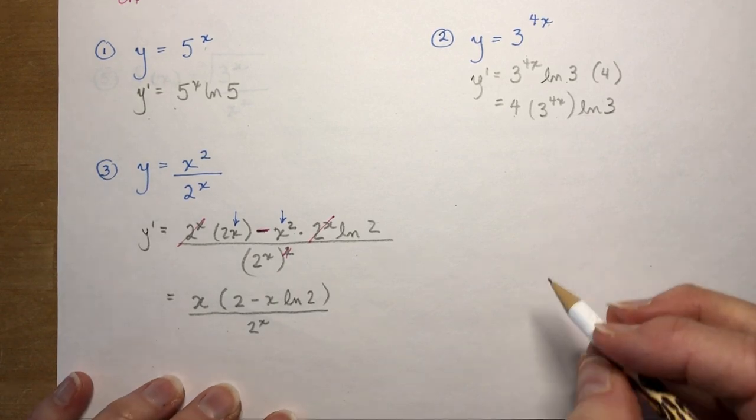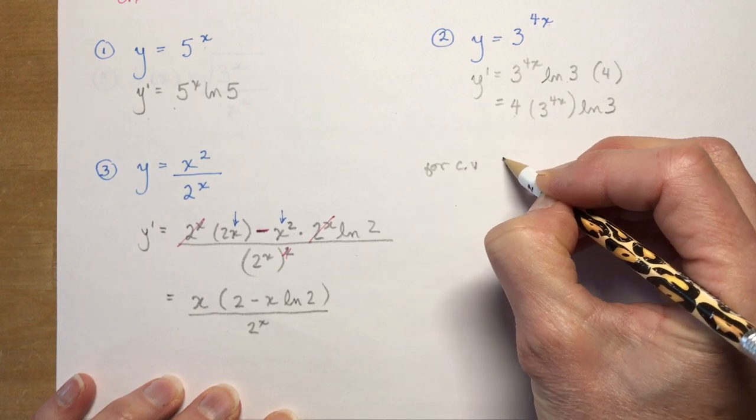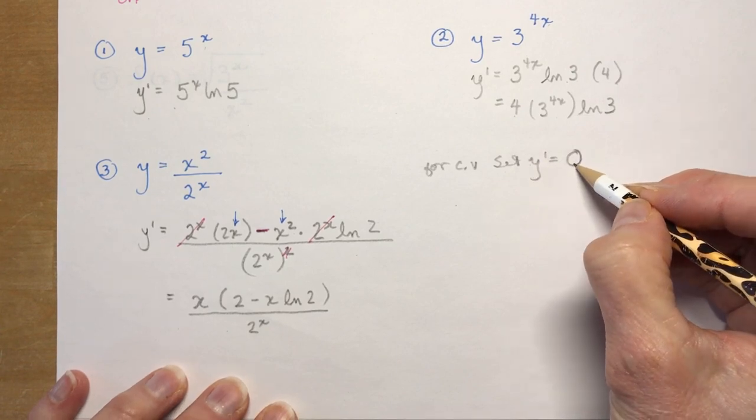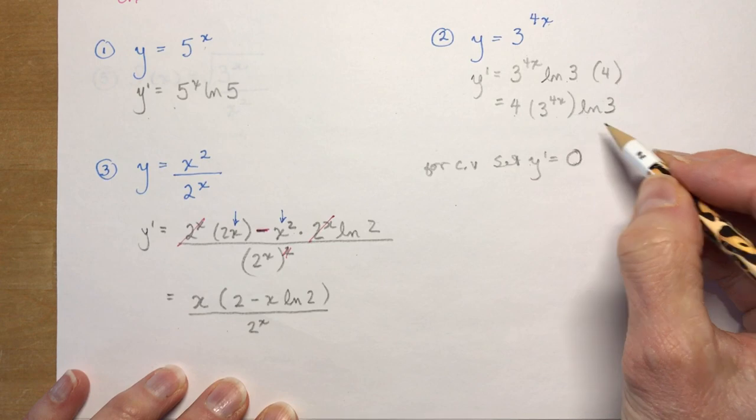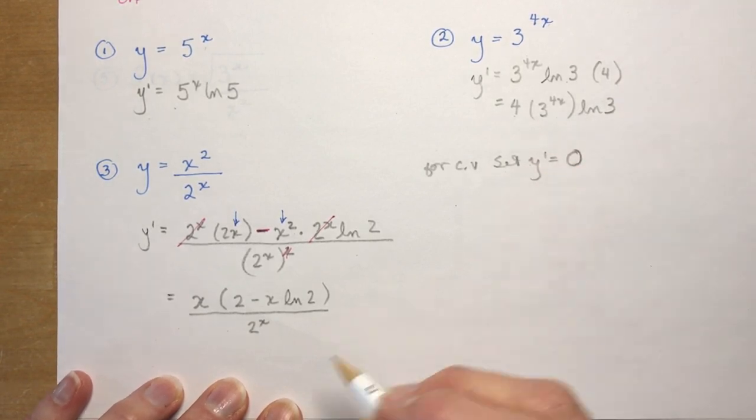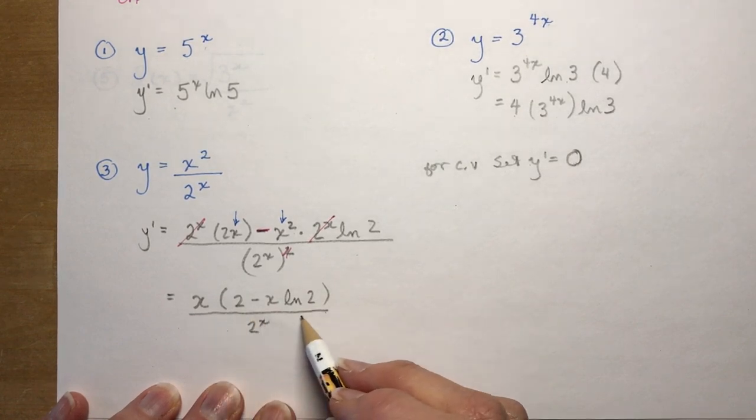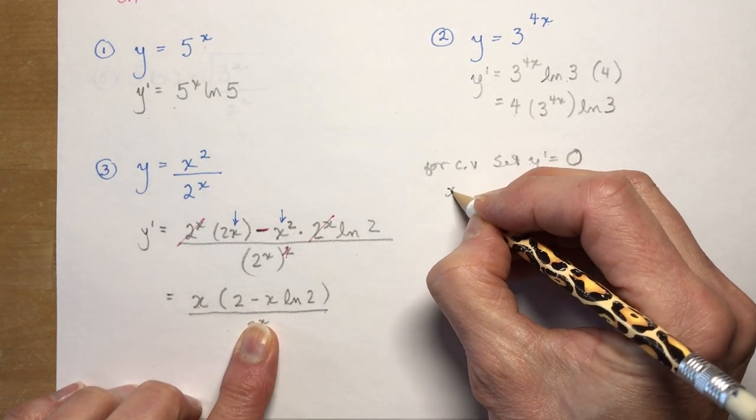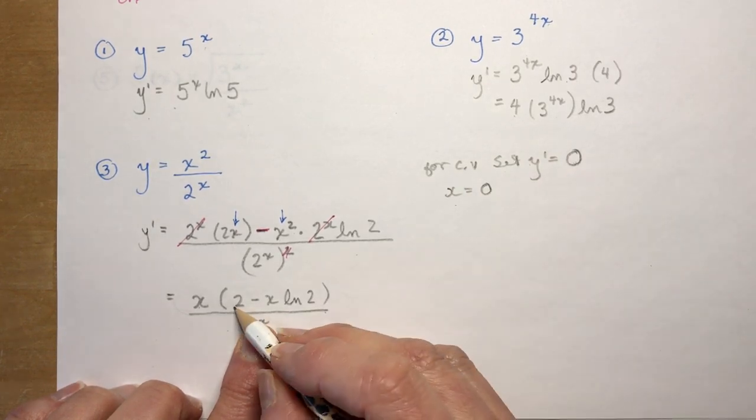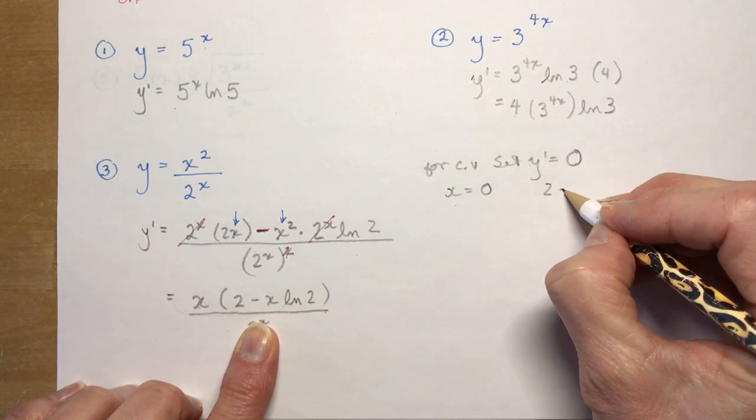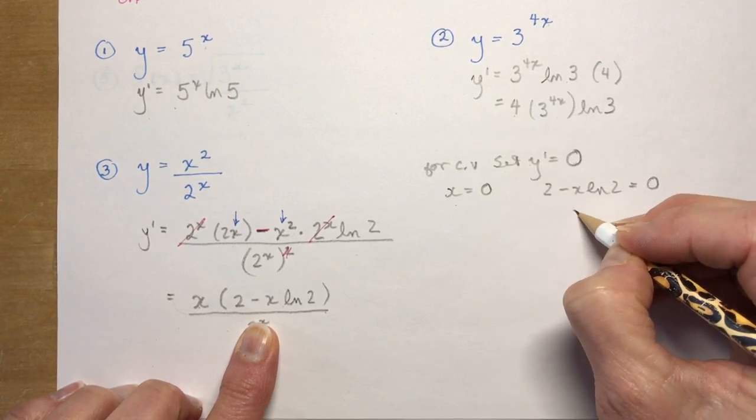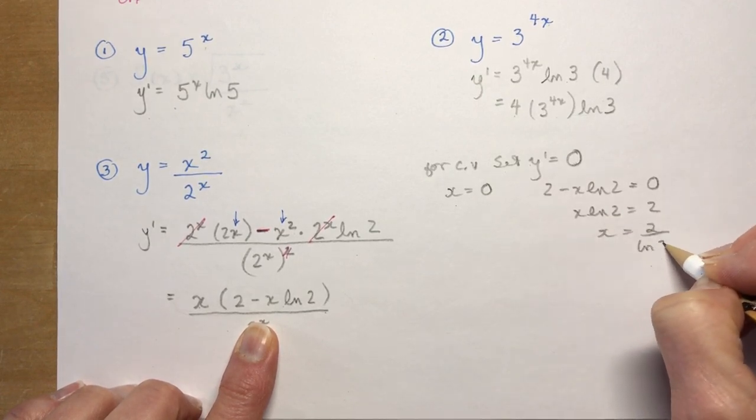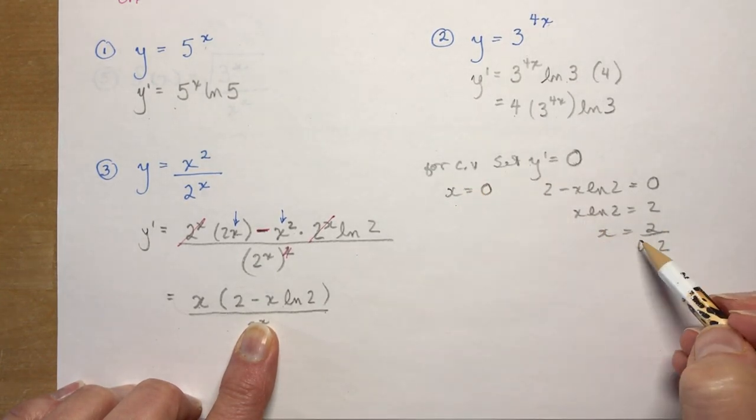So if I asked you for critical value, you'd say, okay, for critical value set y prime equal to 0. Remember that you're looking where y prime is 0, that means where is the slope horizontal, where is the maximum or minimum. That's why we're doing this. And so I set y prime to 0. For y prime to be 0, it only matters what makes the numerator 0. You can't divide by 0. So what makes this 0? So x equals 0. And what makes this 0? So I would say 2 minus x ln 2 is equal to 0. x ln 2 is equal to 2. x is equal to 2 divided by the ln of 2.